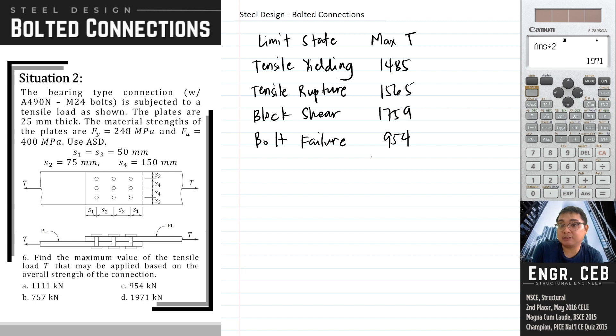Overall, to give an answer for the value of T considering the overall strength of the connection, we will choose the least among these ultimate states, and that is 954 kilonewton. And that is letter C.